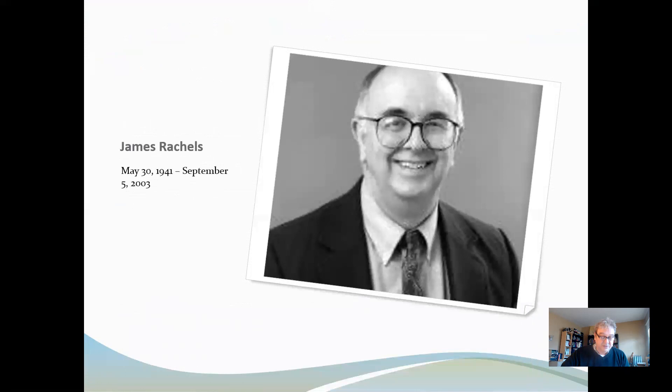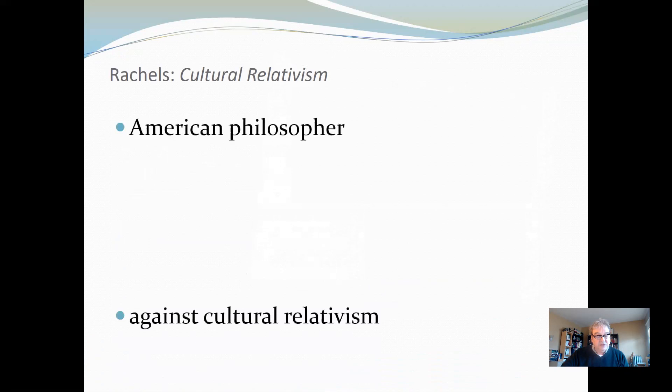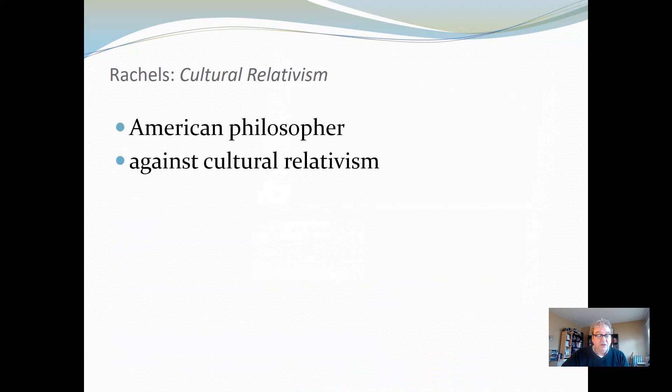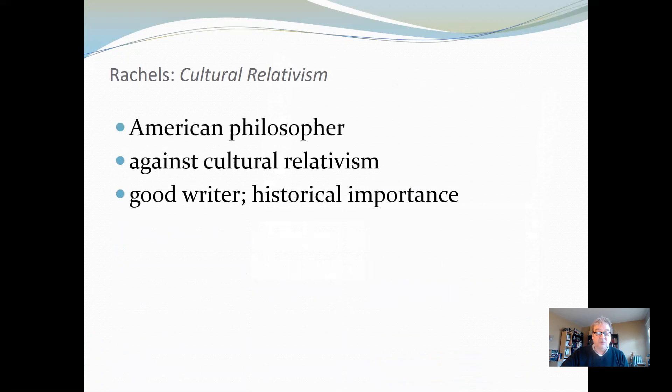James Rachels was an American philosopher who specialized in ethics and animal rights. Whether one agrees with him or not, most people agree that he is a very good writer, and he does a great job explaining cultural relativism, the arguments in its favor, and the arguments against it. Note that his position is against cultural relativism. In this course, articles or excerpts are chosen either because the person is a good writer, or because the article is of such historical importance that it is essential to read it to get the main ideas of the view in question.